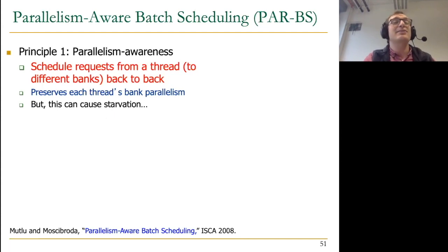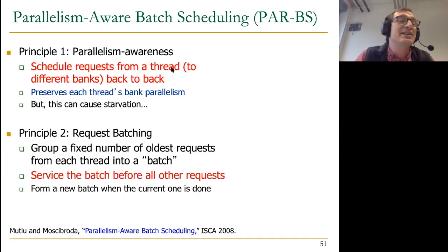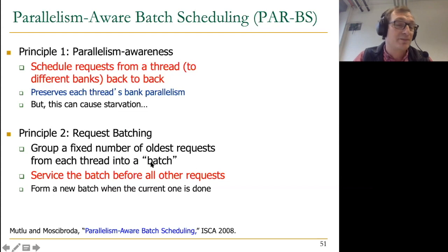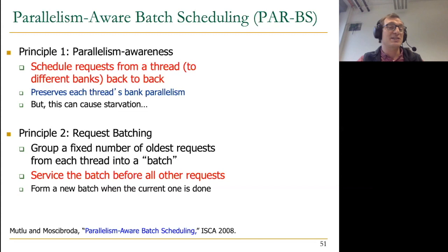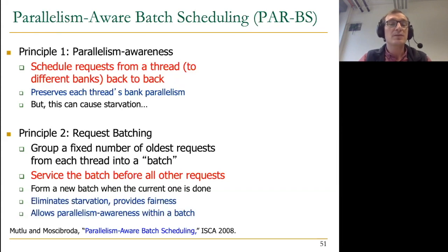If you do parallelism awareness indefinitely, this can cause starvation — you basically keep prioritizing one thread's requests, and threads keep generating requests. So we use request batching, a principle well known in disk systems since the late 1960s. The idea is to group a fixed number of oldest requests from each thread into a batch and service the batch before all other requests. A new batch is formed when the current one is done. This ensures the oldest batch is always serviced before other requests in a given bank. As a result, there is no starvation and very high fairness.